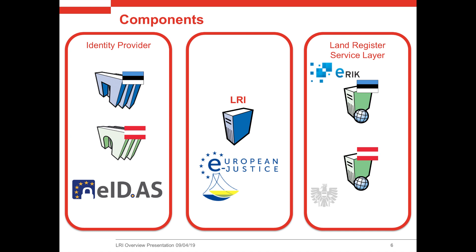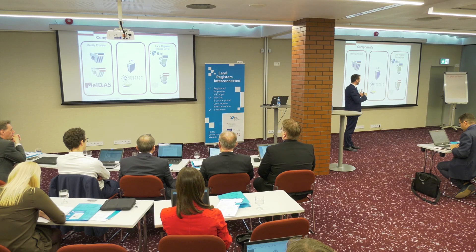From that, we defined three major components for authentication and authorization. First, somebody who provides identity — the identity provider — which can be your governmental organizations, but also EIDAS, or other bodies like Austria's portal of notaries, who can provide the identity of proven notaries. Second, the LRI system, which consumes this authentication information. Third, the service layer, which should not be concerned with authentication at all — they only receive the information and can use it for their needs.